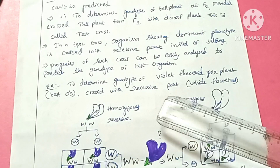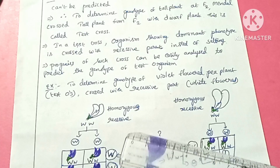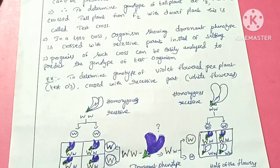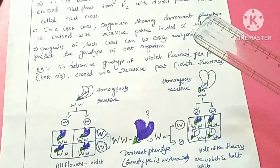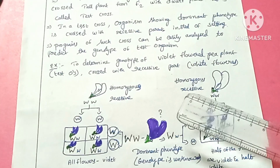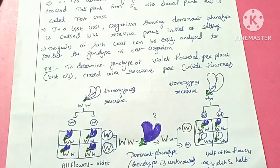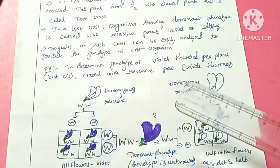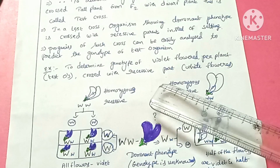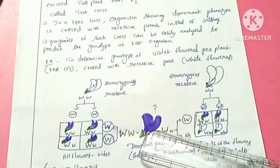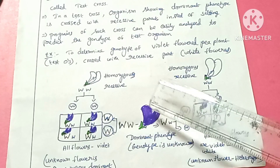For example, it is easy to find out the genotype of a violet flower plant. Violet is dominant over white color flowers. This violet flower plant is the test organism. It could be either homozygous dominant or heterozygous. The recessive parent used in the test cross is a white color flower plant.